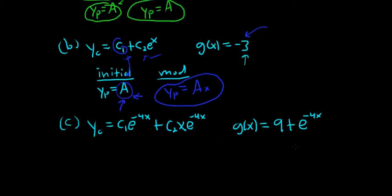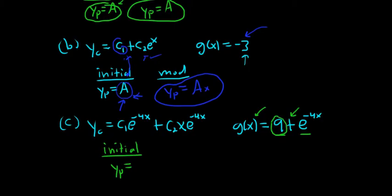As before, we make our initial guess by looking only at the right-hand side of the DE. So Yp — these are two different things separated by a plus sign, so it's like we're making two initial guesses. For the 9, our initial guess is the constant A. And for the exponential part, that's going to be plus B e to the negative 4x. So it's like two separate guesses.